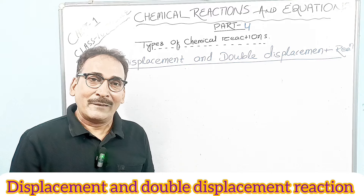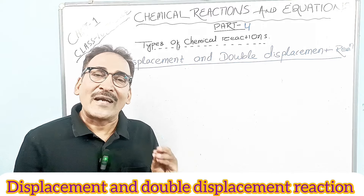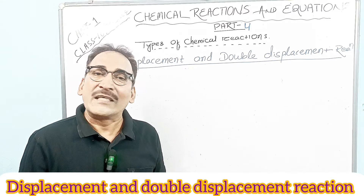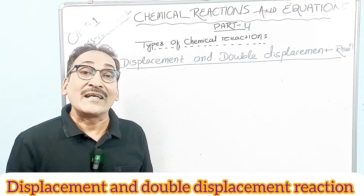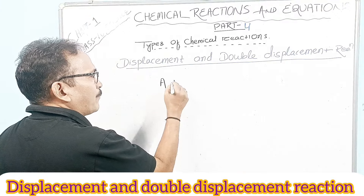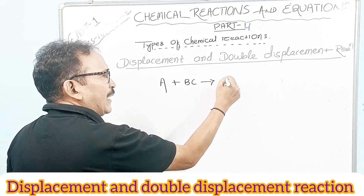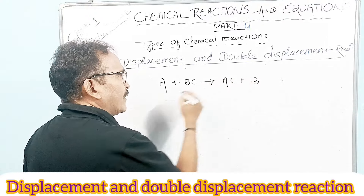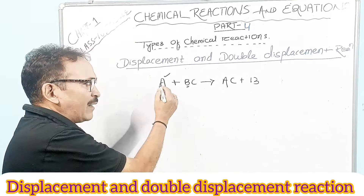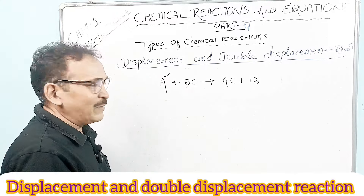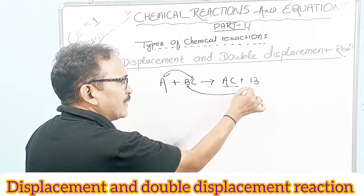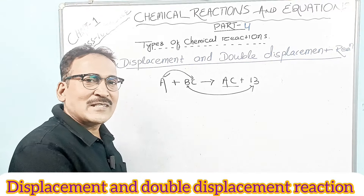What is displacement reaction? In this reaction, a more reactive element displaces the less reactive element from its compound. This is known as displacement reaction, also known as single displacement reaction. The general form is: A + BC → AC + B. Here, A is the more reactive element than B, so A displaces B to form AC.